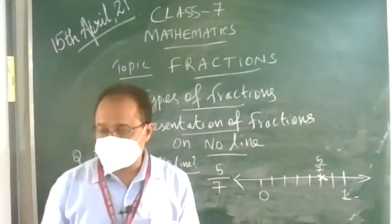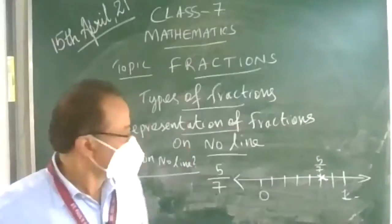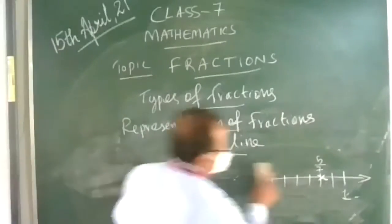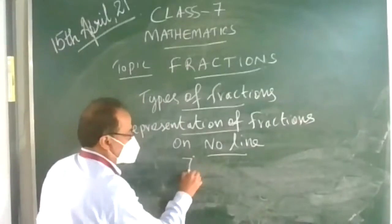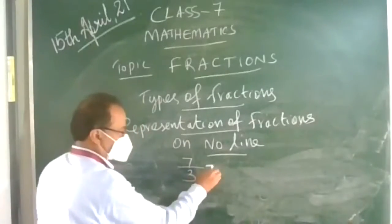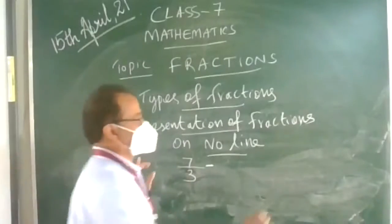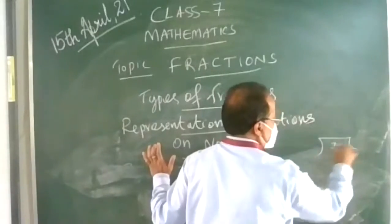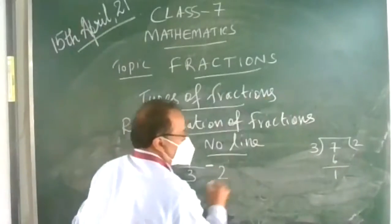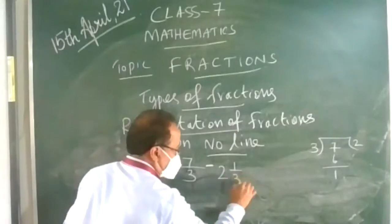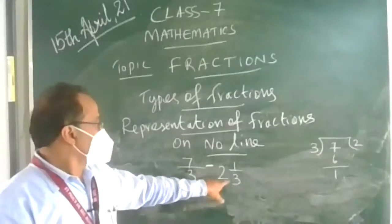This is how to represent proper fractions on the number line. Now I will take an example of an improper fraction: 7 upon 3. First, convert it to a mixed fraction by dividing — 7 upon 3 gives 2 whole number and 1 upon 3. So, 7 upon 3 can be written as 2 and 1 upon 3.